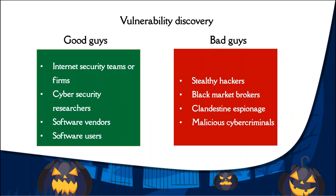The first step involves discovery of a vulnerability. There is literally no software that is completely secure from vulnerabilities. They may be discovered by the good guys — internet security companies, cybersecurity researchers, or the software vendors themselves. If discovered by these parties, they usually report the flaw to the vendor and keep the vulnerability data under wraps until the vendor releases details to customers. Sometimes the bad guys might be the first to discover the vulnerability — they may exploit it or sell the information on the black market.